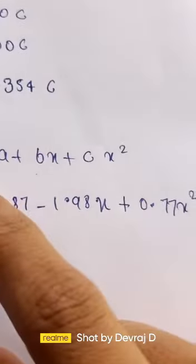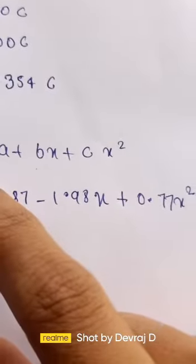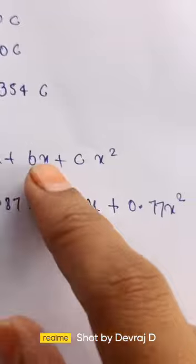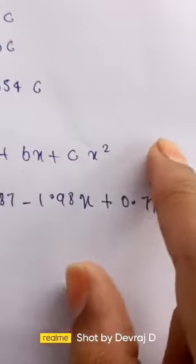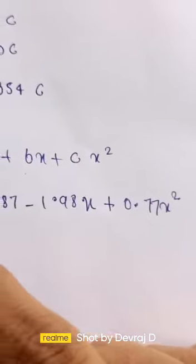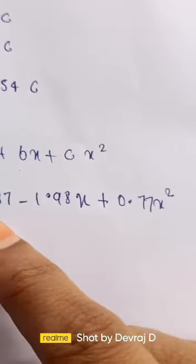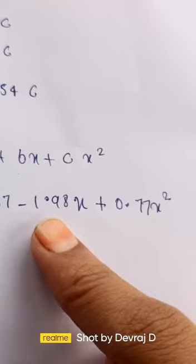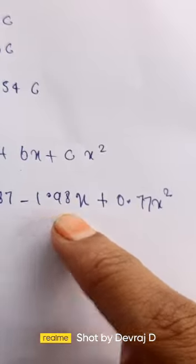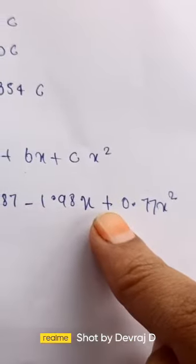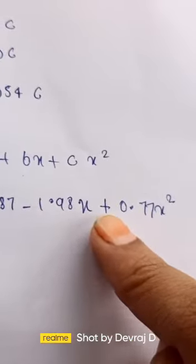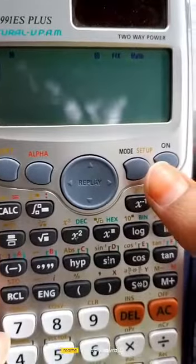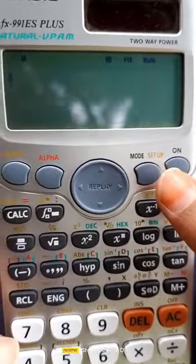Then the parabola equation is y equal to a plus bx plus cx square, which gives y equal to 1.87 minus 1.98x plus 0.77x square. To solve the equation using ESCALC,